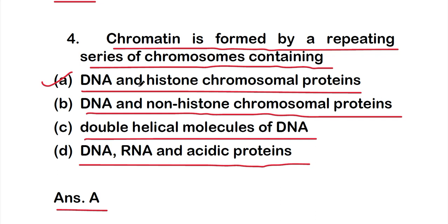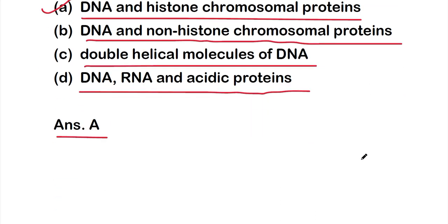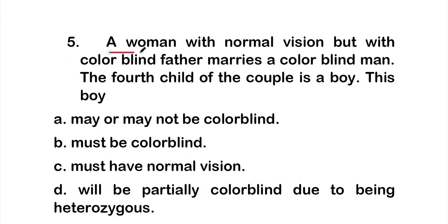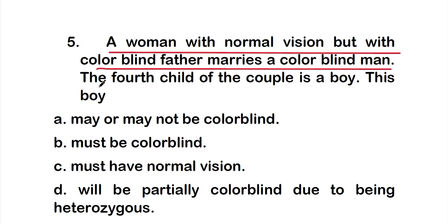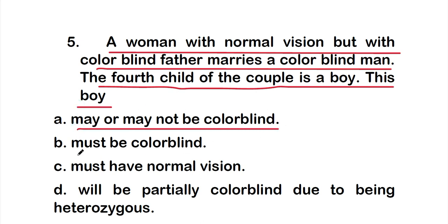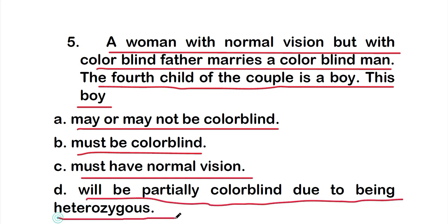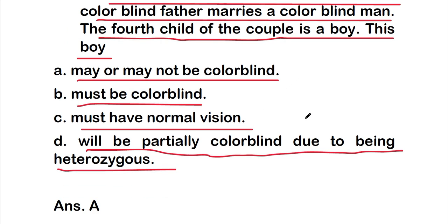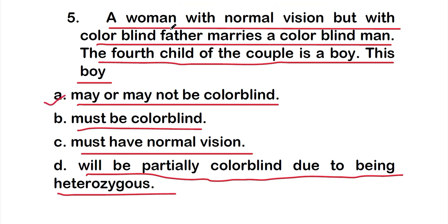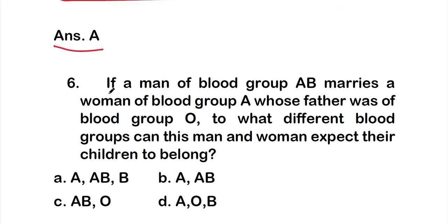Question five: a woman with normal vision but with a colorblind father marries a colorblind man. The fourth child of the couple is a boy. This boy — option A: may or may not be colorblind, option B: must be colorblind, option C: must have normal vision, or option D: will be partially colorblind. The right answer is option A, the boy may or may not be colorblind.